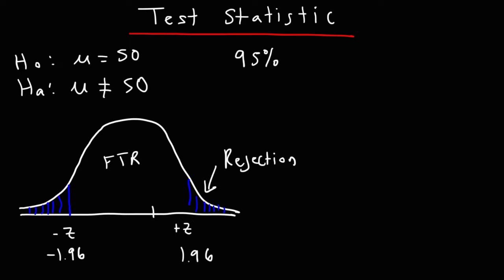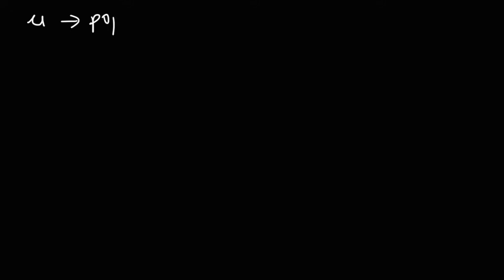Now let's talk about how we can calculate ZC, which is known as the test statistic. First, let's talk about whether we have a population mean versus a population proportion. Sometimes we may need to use the T distribution; other times we need to use the normal distribution and get the Z value.